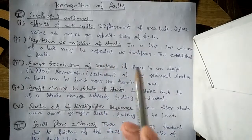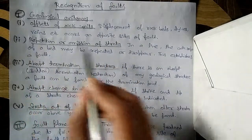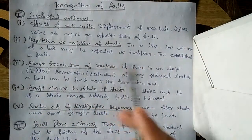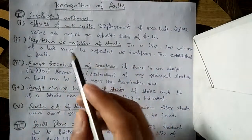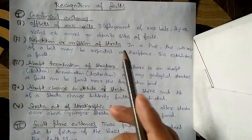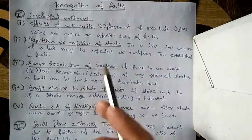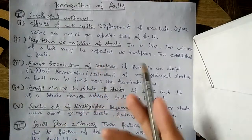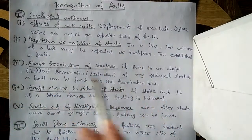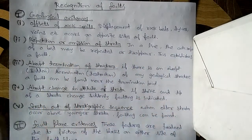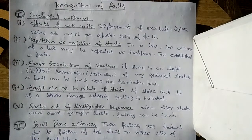The second geological evidence is repetition or omission of strata. If we move along a line, the outcrop of a bed may repeat or disappear — it appears, then repeats, then disappears, then appears again. This kind of structure establishes a fault. The third evidence is abrupt termination of structures. An outcrop is a large mass of rock that stands above the earth's surface.